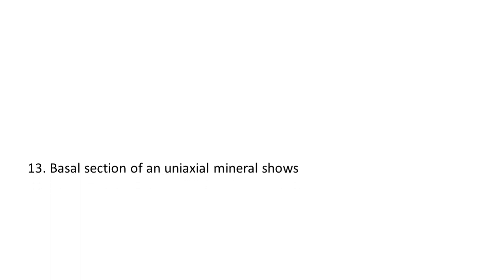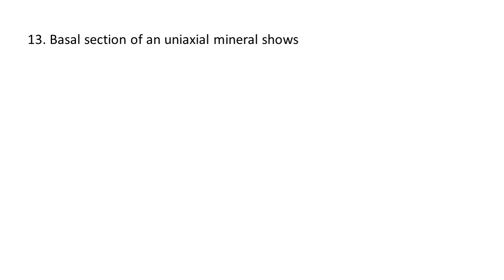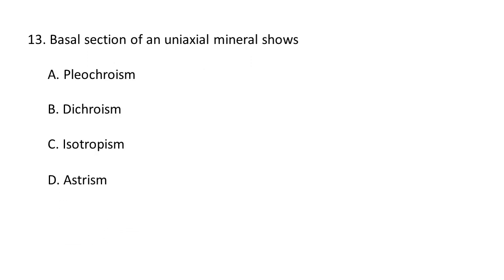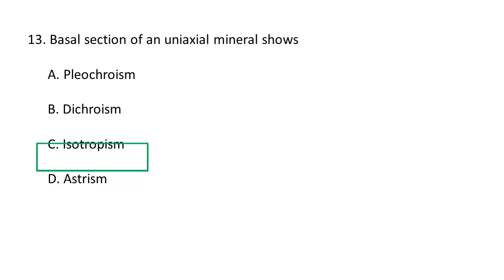Next question: Basal section of a uniaxial mineral shows — A. pleochroism, B. dichroism, C. isotropism, D. asterism. Basal section of a uniaxial mineral shows isotropism. Basal sections of uniaxial minerals appear isotropic because light travels at the same speed along the optic axis, and the C axis is the same in all classes. C is the correct option.